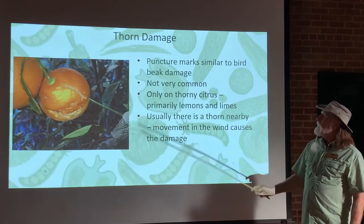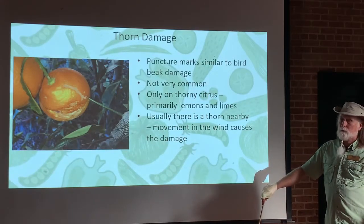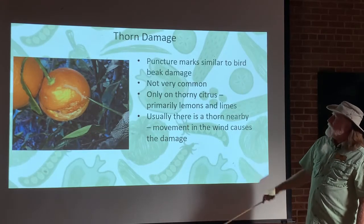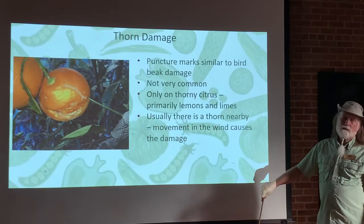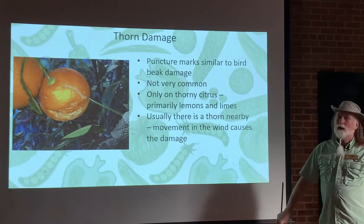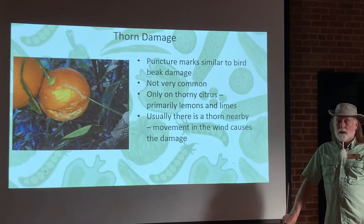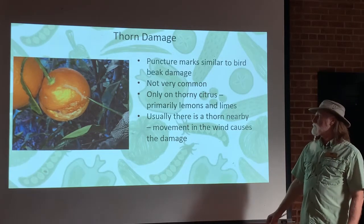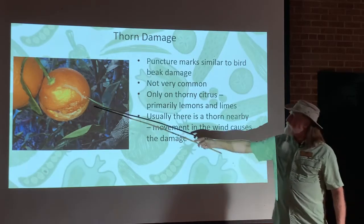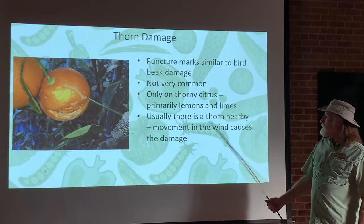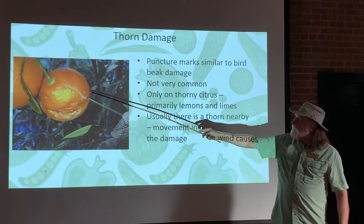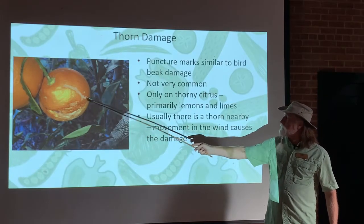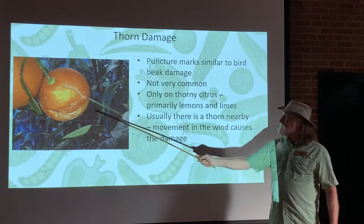So birds are actually doing a little bit of self-prevention by using citrus oils from your fruit. Now thorn damage can look a lot like bird damage, but with thorn damage you're going to have puncture marks and scratches. It's not as common because most citrus trees don't have thorns — only thorny ones like lemons and limes, or if you allow rootstock trifoliate orange growth with its lots of thorns. Thorn damage is caused by movement of the fruit near a thorn during wind, causing punctures and scratches, with the thorn sticking out right near the fruit as you can see here.